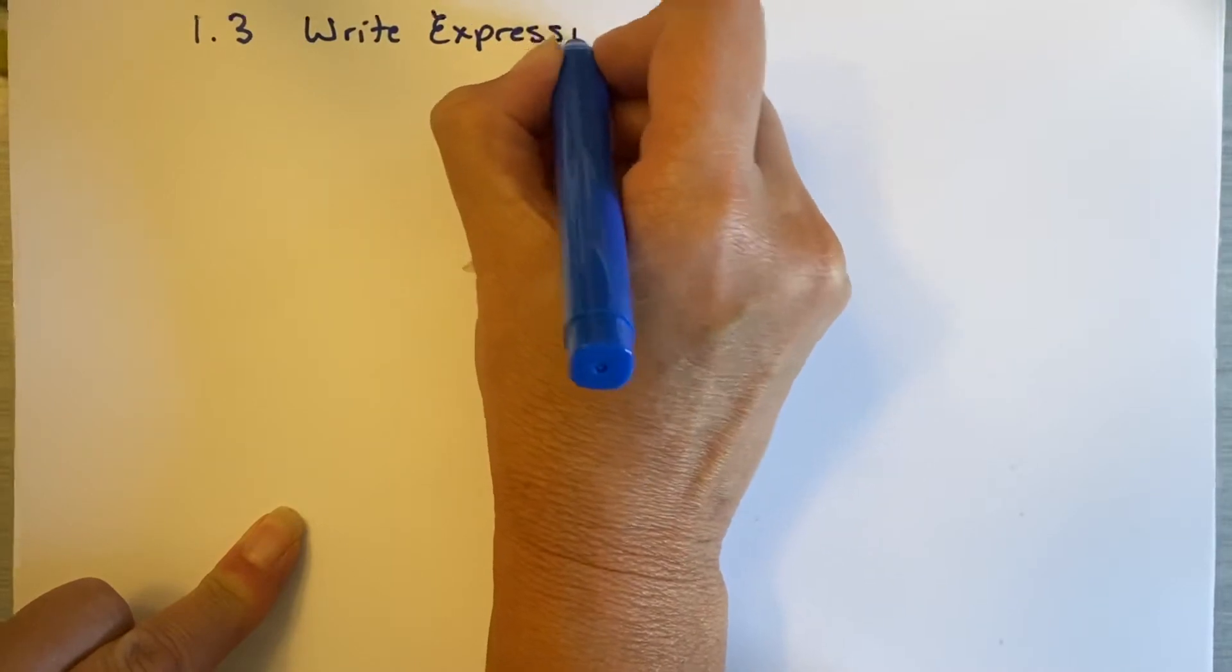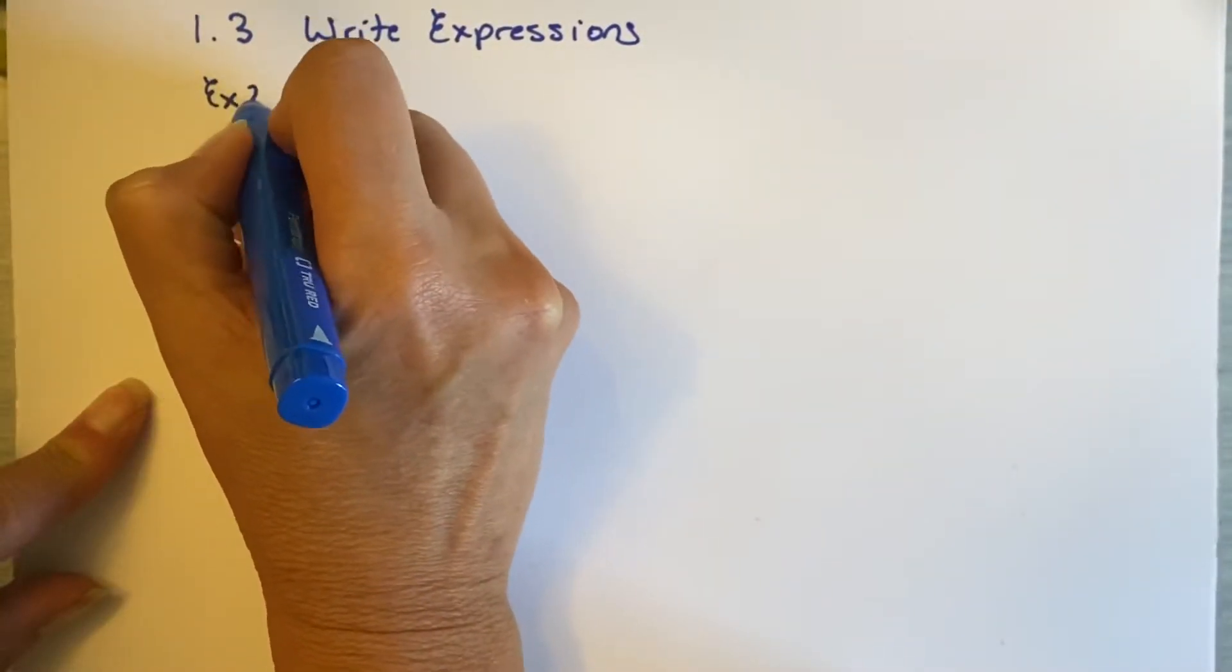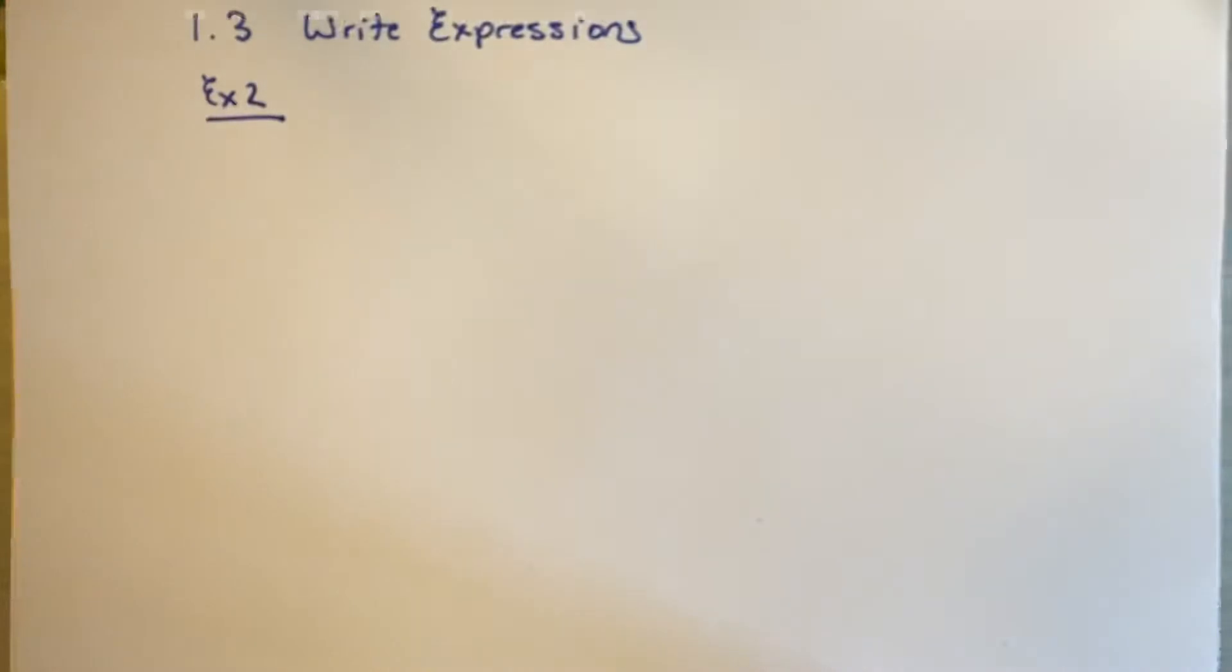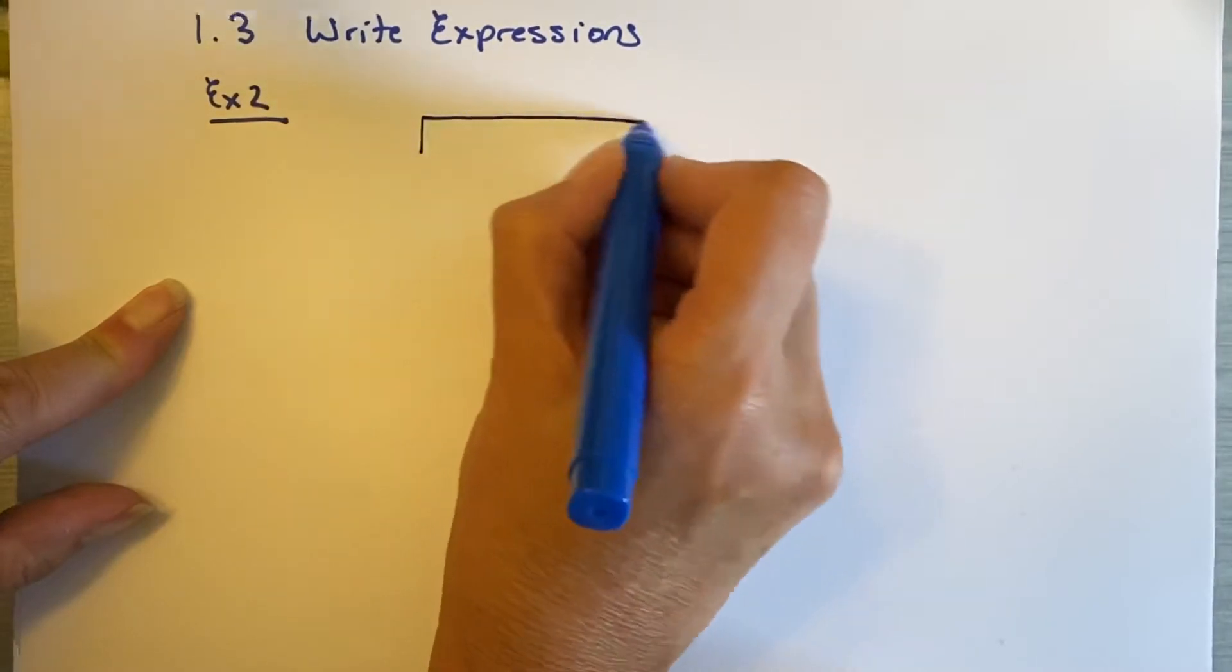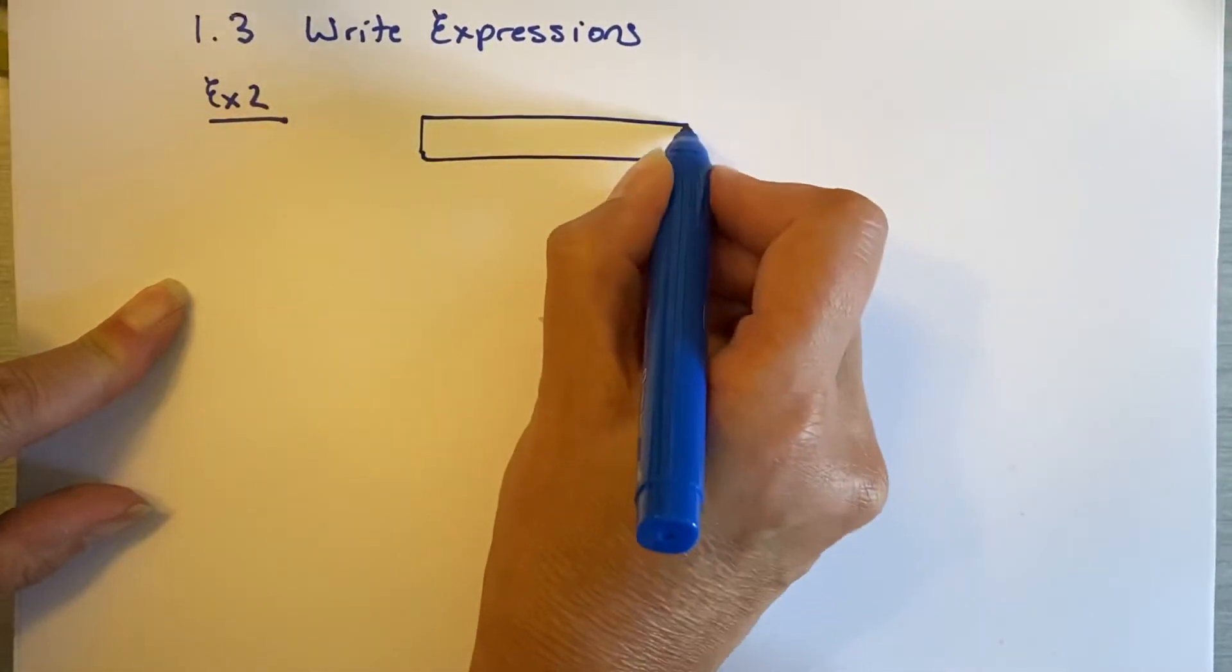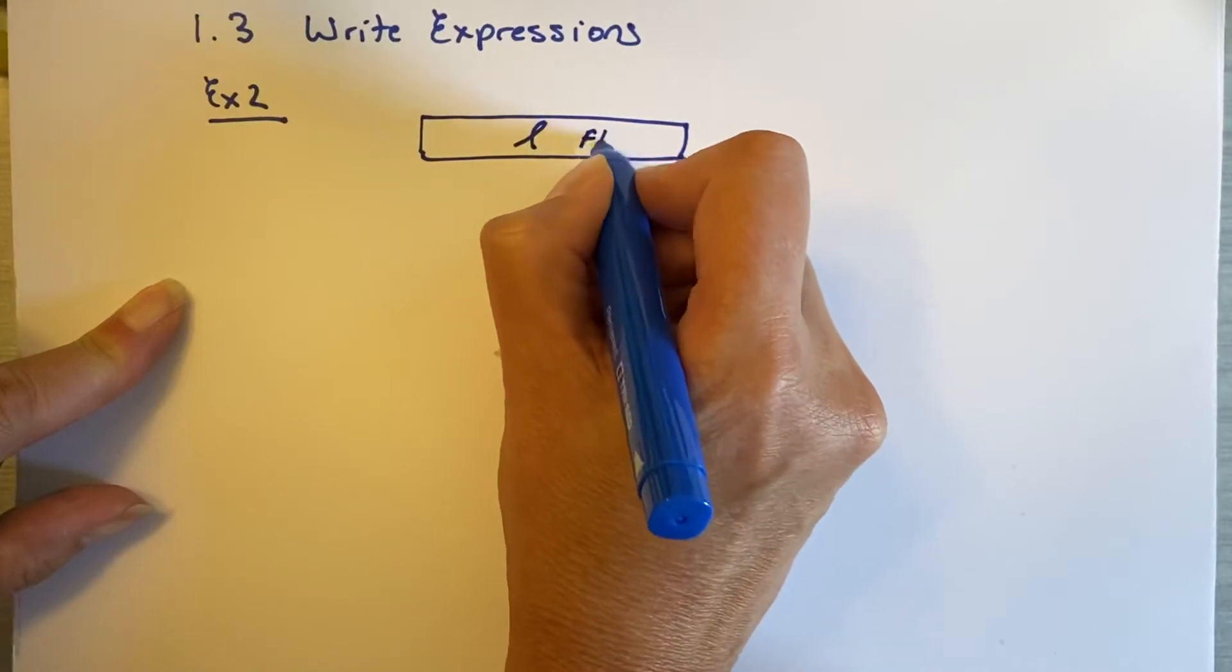I grabbed a better marker. We'll see if it makes things clearer. Alright, I'm on example two. A piece of ribbon, L feet long. Okay, so we have a piece of ribbon and we know it's L feet long.